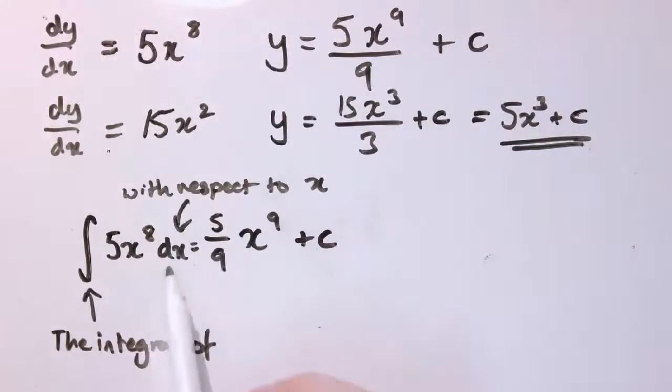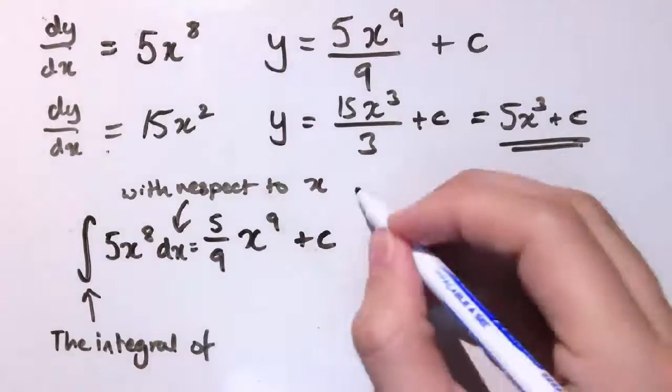And this dx bit is really important. And it tells us which of the letters in here we're integrating with respect to. Now, I almost left it off initially because there was only one letter in there, the x. And so, it was kind of obvious that we're integrating with respect to x. But we should still put the dx in. Certainly, in exams, you'll get penalized if you don't do that. Of course, it's really most important when we've got two different letters inside the integral.